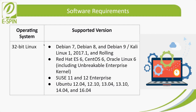For software requirements, for 32-bit Linux, the supported versions are: Debian 7 through Debian 9, and Kali Linux 1, 2017.1, and rolling; Red Hat ES6, CentOS 6, and Oracle Linux 6 including Unbreakable Enterprise Kernel; SUSE 11 and 12 Enterprise; and Ubuntu 12.04, 12.10, 13.04, 13.10, 14.04, and 16.04.